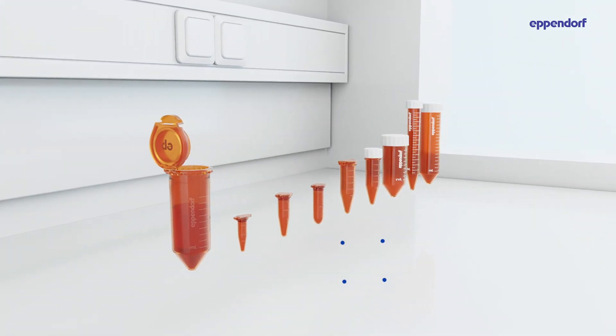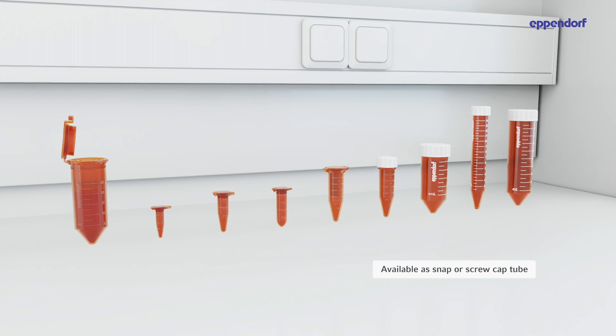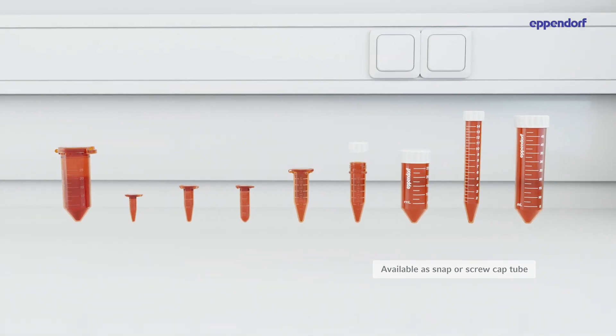Eppendorf amber-colored tubes are available as safe-lock tubes and conical tubes, with snap or screw cap. Choose your format carefully.